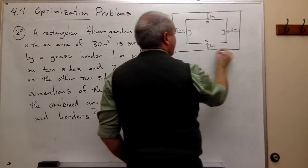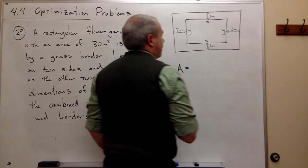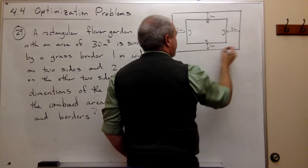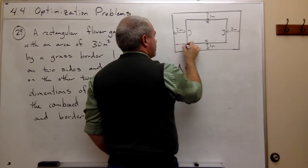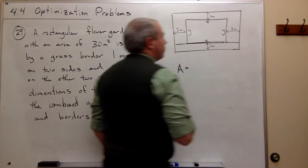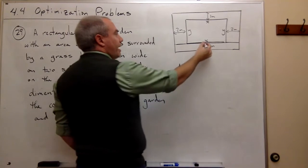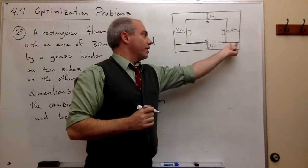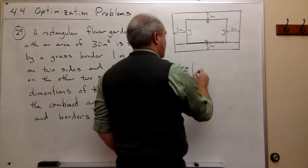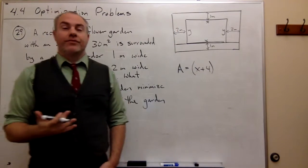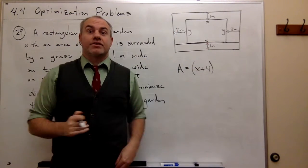If I'm looking at this length of this big rectangle, it's x plus the margins, right? So it's 2 here, it's x here, and it's 2 more here. So it's really x plus 4. Two plus x plus 2 is x plus 4. So that's the length of the garden plus the border.